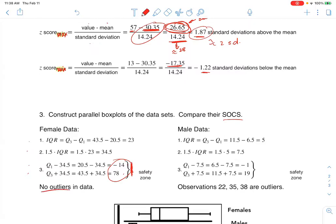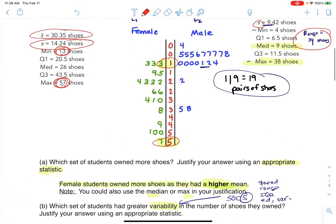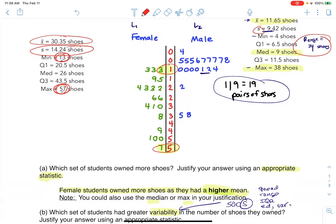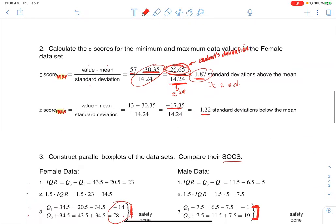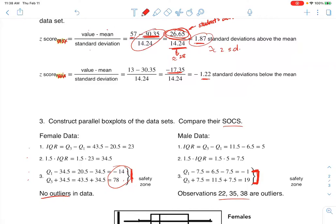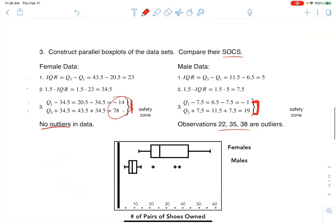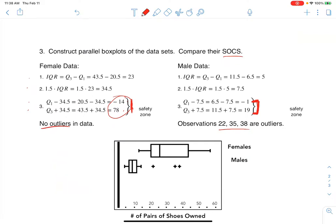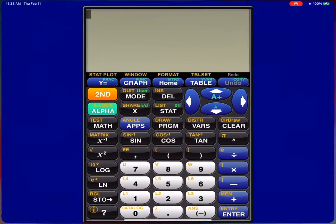Now on the flip of that, think about how it looks for the male data from negative one to 19. So let's think about negative one to 19 and go up to this male data. So negative one to 19 is from about here to about here. This was the safety zone, at least on the male side. So you can see, I have three data values at 22, 35, and 38 that are outside of the safety zone. So I have three outliers. So I'm taking note of that. I have these three observations are becoming outliers.